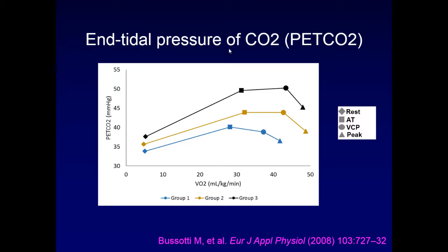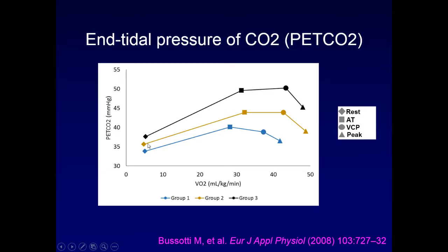A study examining highly trained athletes found that the highest trained athletes, medium trained athletes, and lowest of the high trained athletes had different end-tidal CO2 pressures. They all roughly have the same dead space at baseline, but individuals who can exercise more and have better fitness reach higher levels of end-tidal CO2 — partially explaining why they are so much more fit. All groups show the same pattern: increase to anaerobic threshold and then decrease to peak.